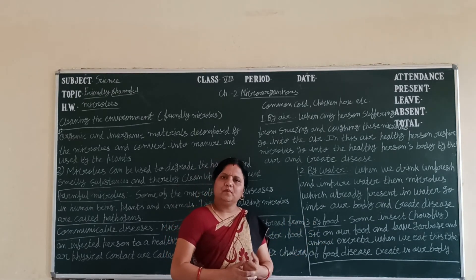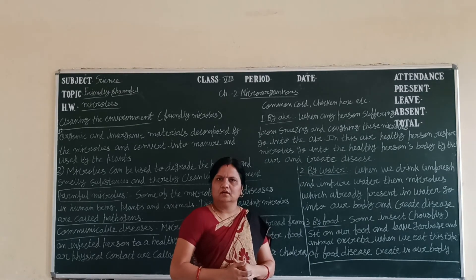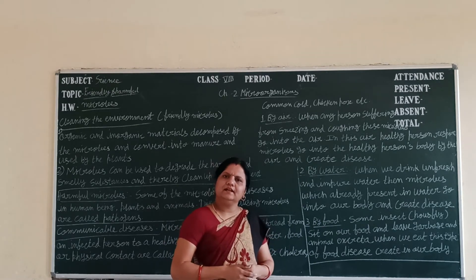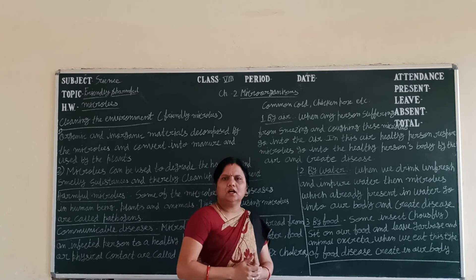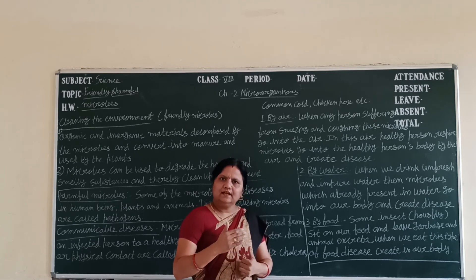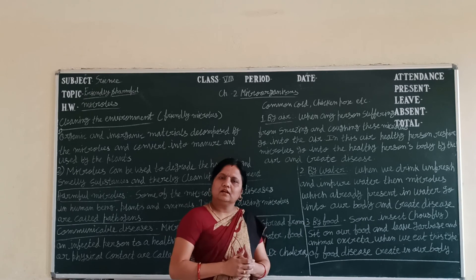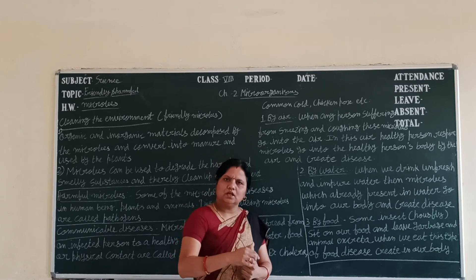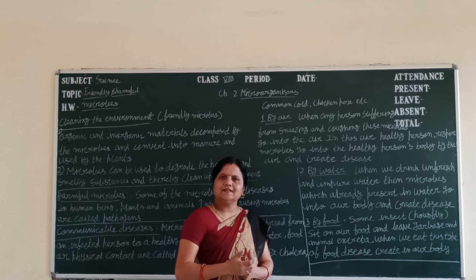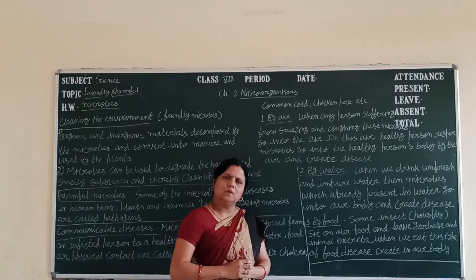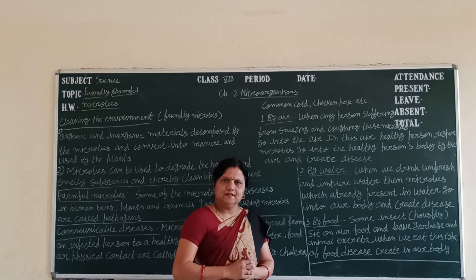By food — houseflies and different types of insects sit on our food. Because they fly here and there — on plants, humans, excreta, anywhere — when they sit on our food, they leave excreta and waste material on it. When we eat this type of contaminated food, microbes enter our body and create different types of disease.